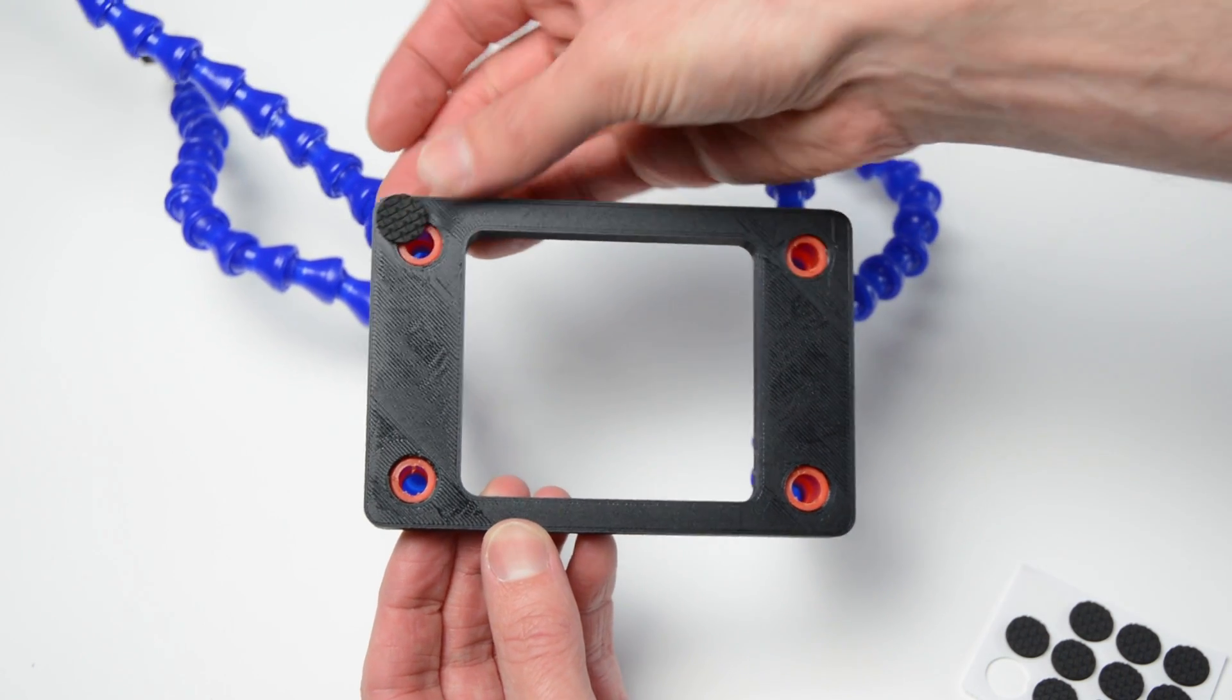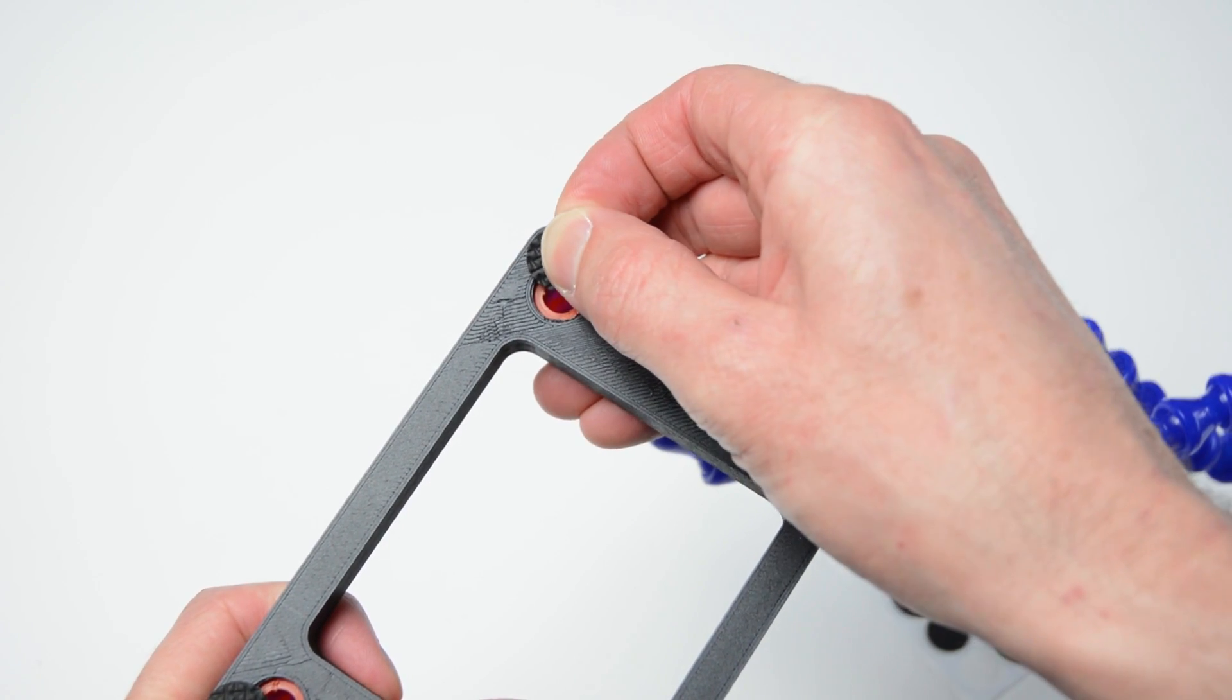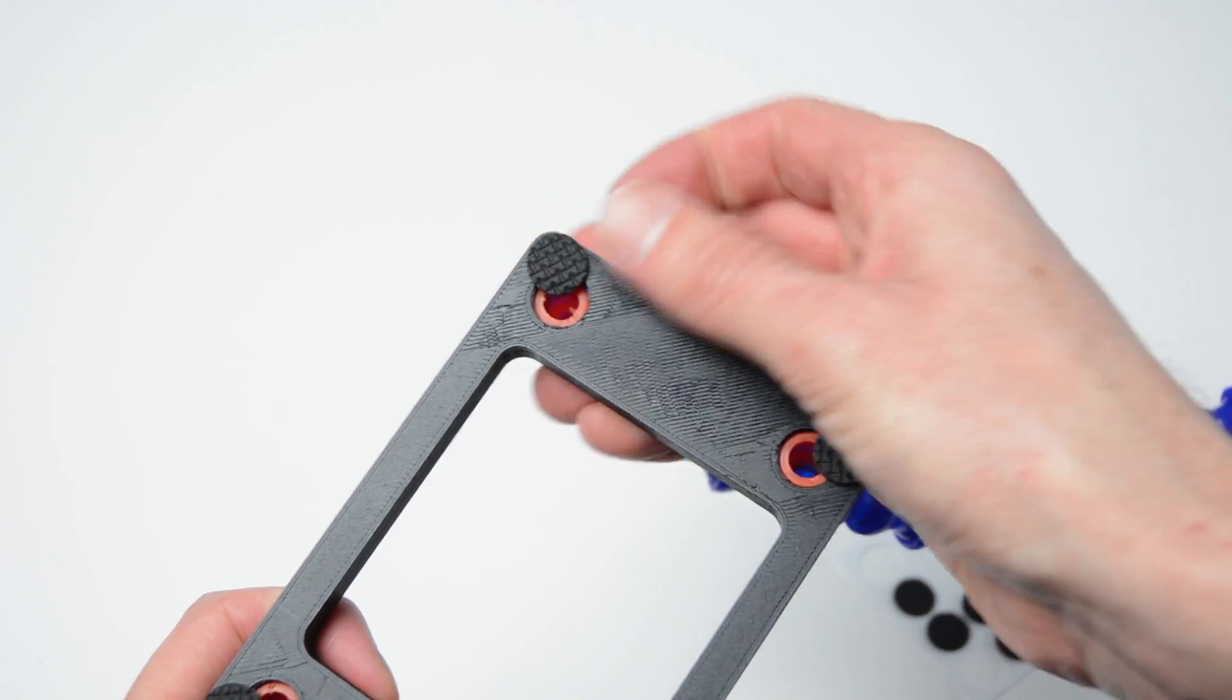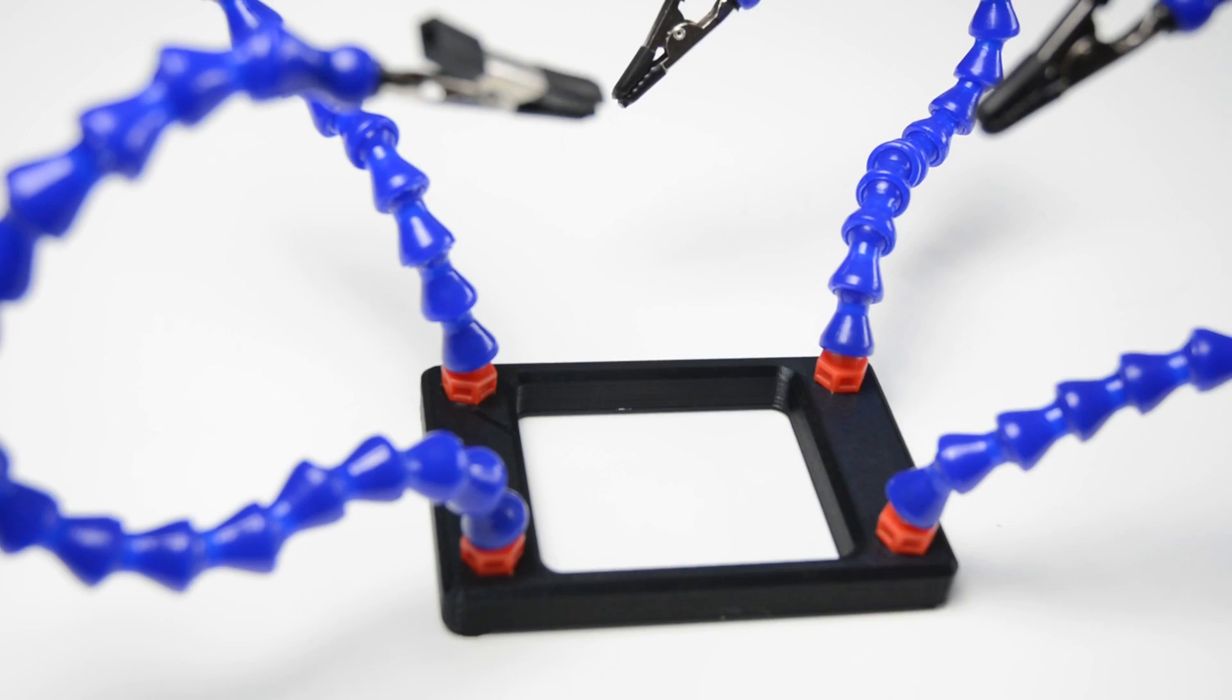To stop the base sliding around on a bench apply some non-slip pads to the bottom. Add some heat shrink to the ends of the clips to prevent scratching and damaging PCBs or wires.